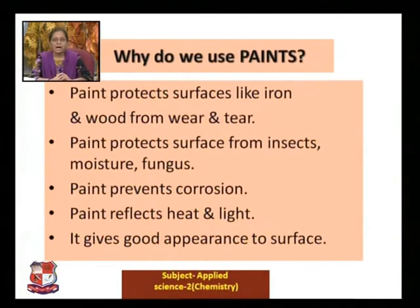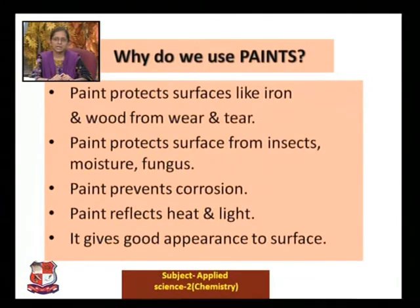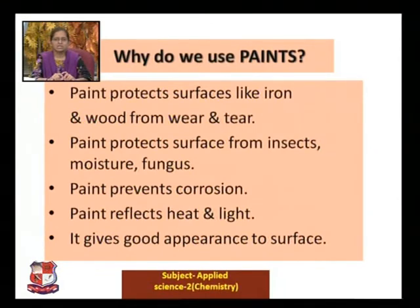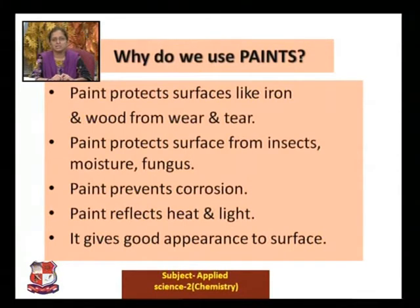Why do we use paint in daily life? Paint basically protects surfaces like iron and wood from wear and tear. It protects surfaces from insects, moisture, and fungus. Paint prevents corrosion of the surface. At the same time, paint reflects heat and light — we use white paint in summer because it has the ability to reflect heat and light. Paint also gives good appearance to the surface.